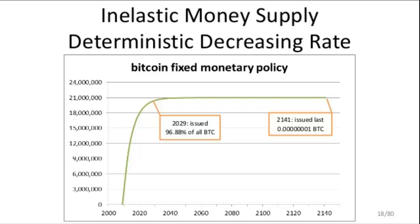At that point, there should be approximately 21 million Bitcoins in the ecosystem. In 2009, the reward was 50 Bitcoin. In 2012, it fell down to 25 Bitcoin. And in 2016, it dropped to 12.5 Bitcoin, which is the current reward issued at the time that this video was recorded.